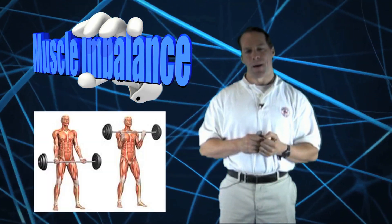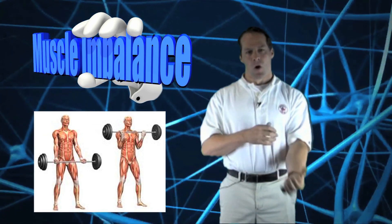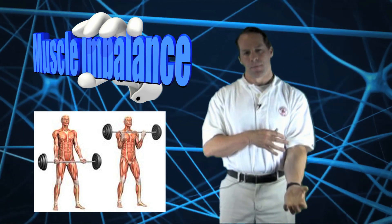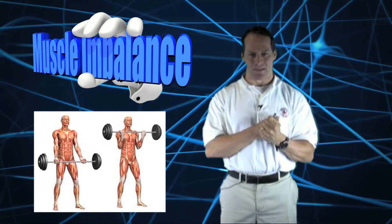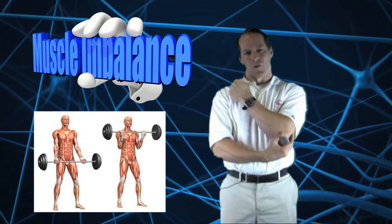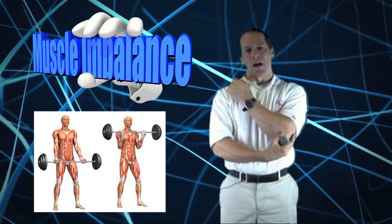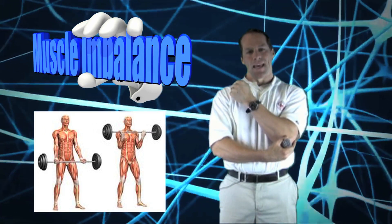I will use the example of the bicep curl to help you better understand this concept. When curling a dumbbell, the prime mover is the bicep, also known as the agonist. The tricep is relaxed during this contraction cycle and allows the bicep to contract fully. The tricep is the antagonist.